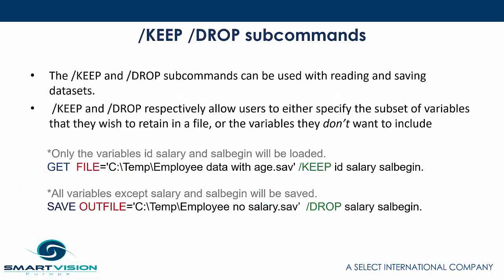We've also got slash keep and slash drop, which are similar to delete — getting rid of variables. Slash keep and slash drop respectively allow users to specify the subset of variables they wish to retain in a file, or the variables they don't want to include. These are generally used with get file and save outfile. So when loading data, slash keep with employee data, age would just load those three fields — ID, salary, and beginning salary. Whereas slash drop when saving allows you to get rid of fields you don't want to retain.